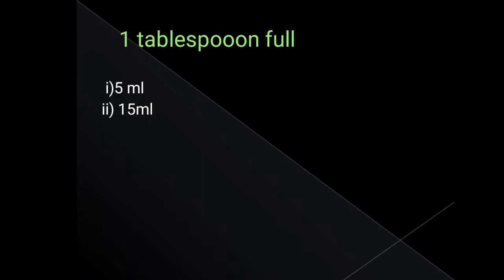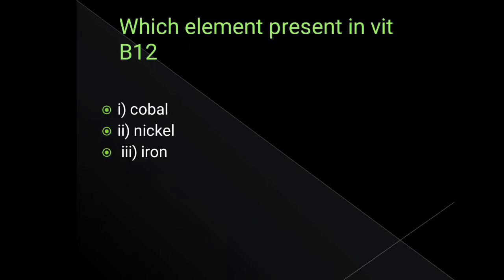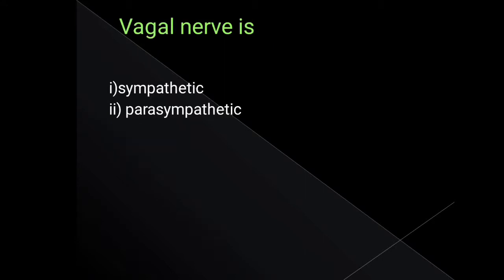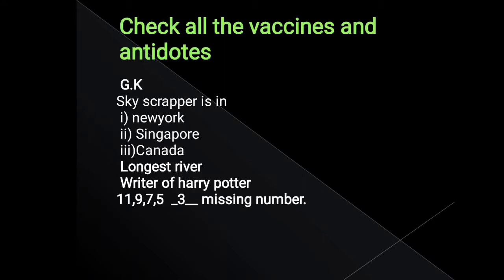One tablespoon full is equivalent to what? Which element is present in vitamin B12? What is the vagal nerve? Check all the vaccines and antidotes — this is basic knowledge and not enough for AKU test or interview. Along with this, check all vaccines and their schedules. I am making a video on antidotes and drugs contraindicated in pregnancy.